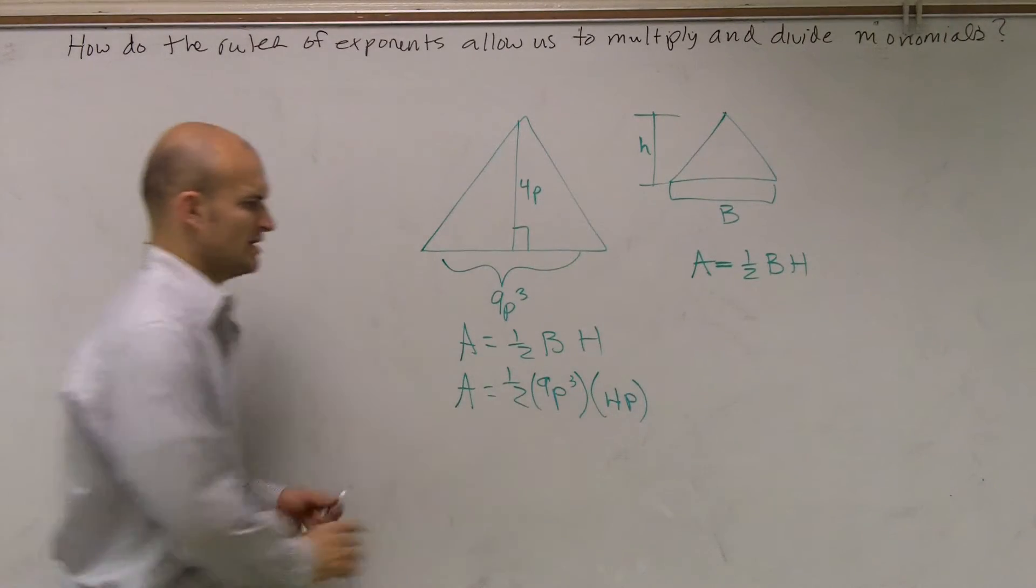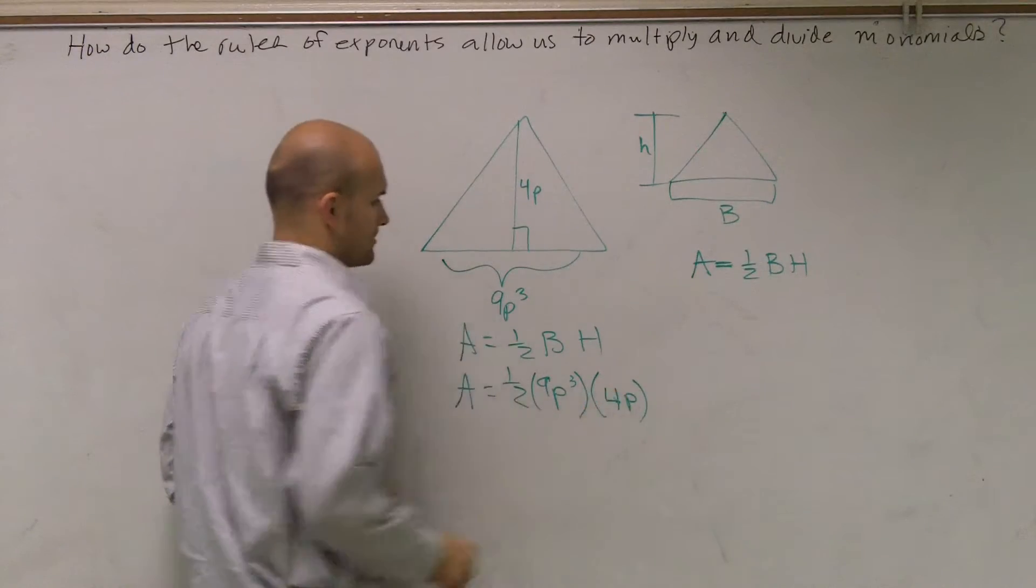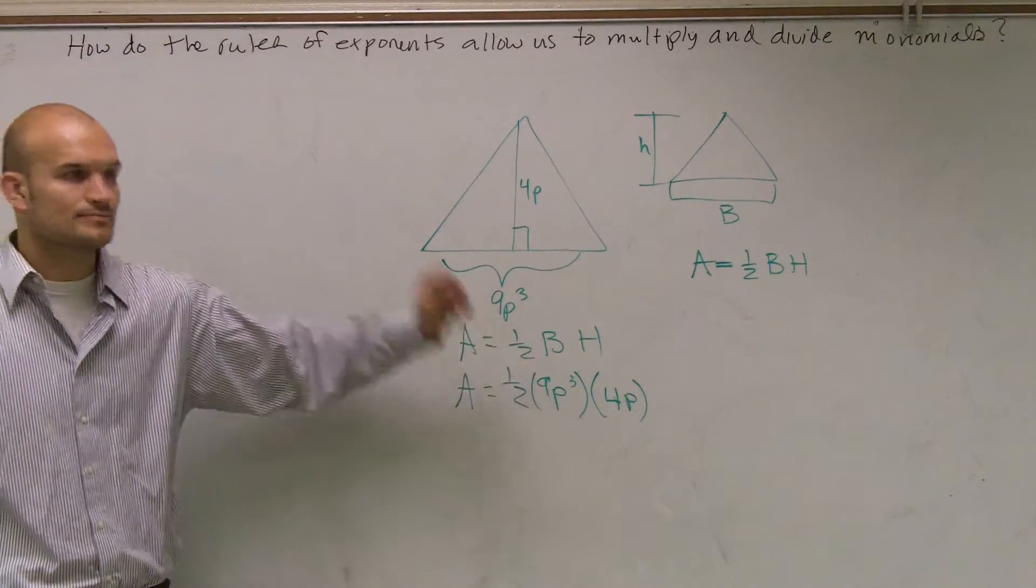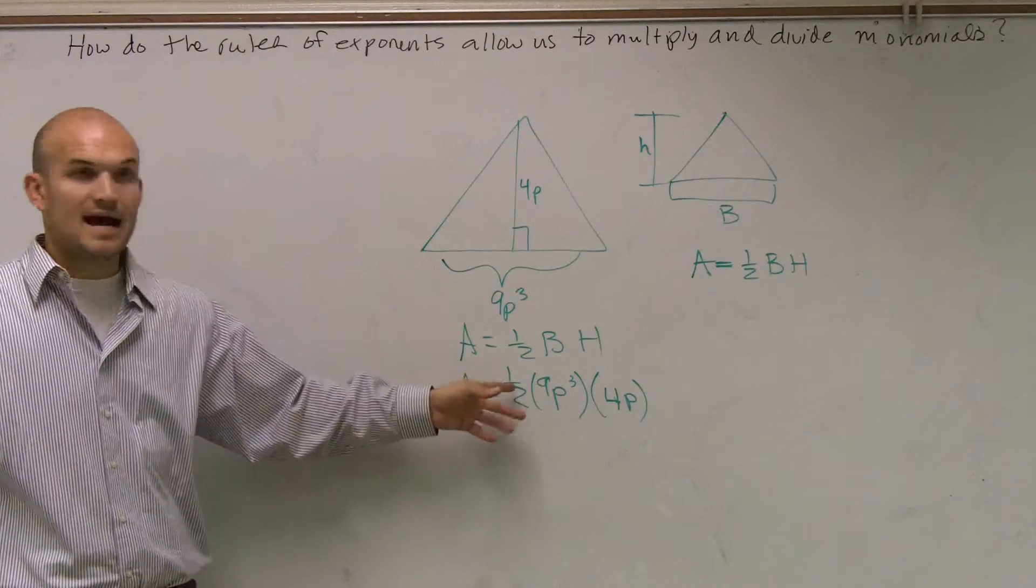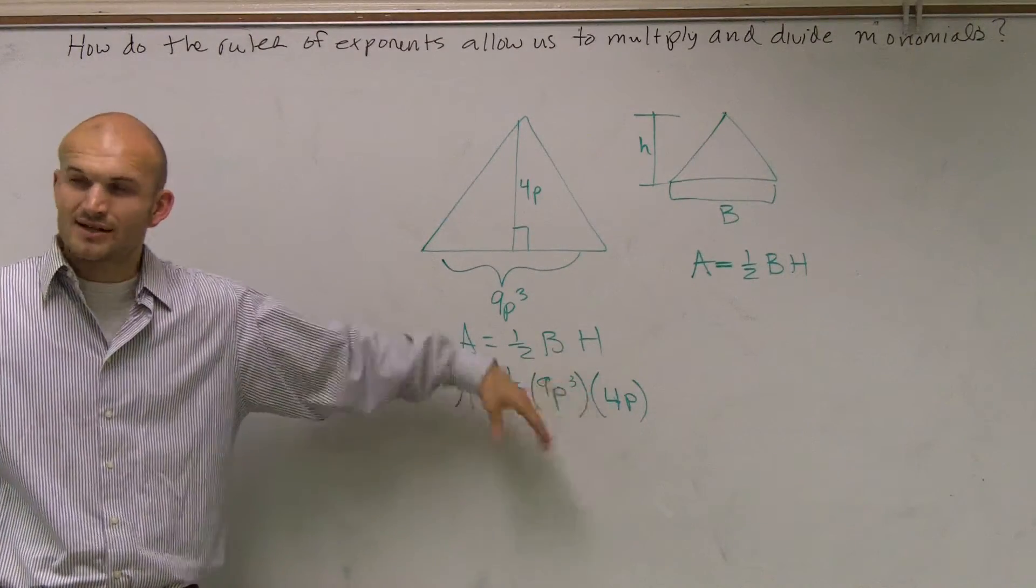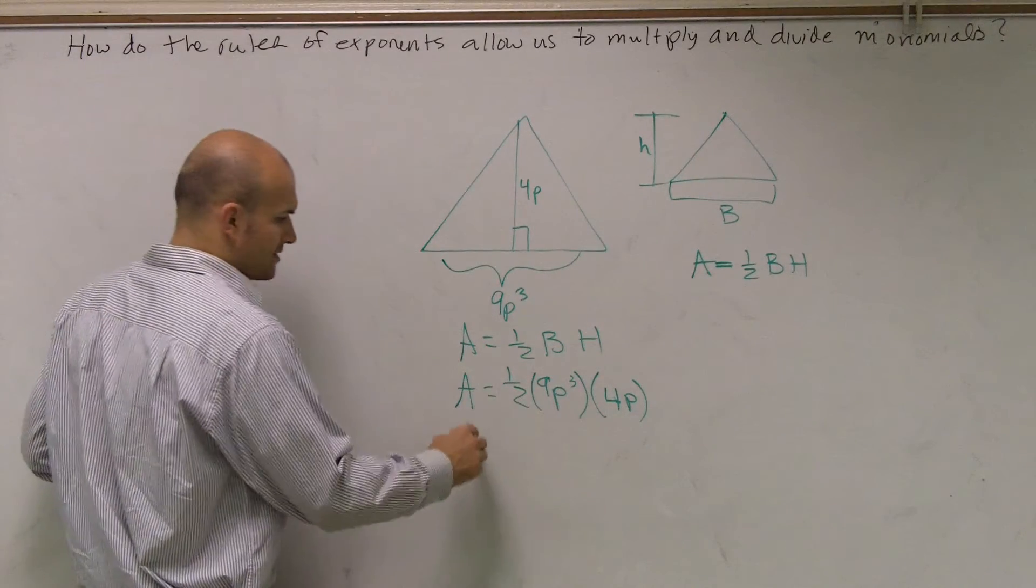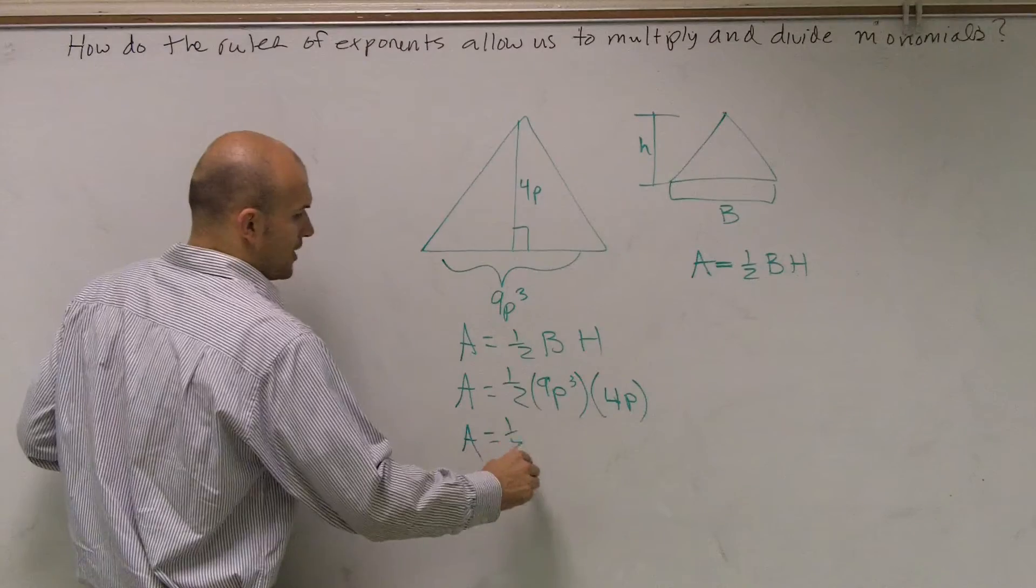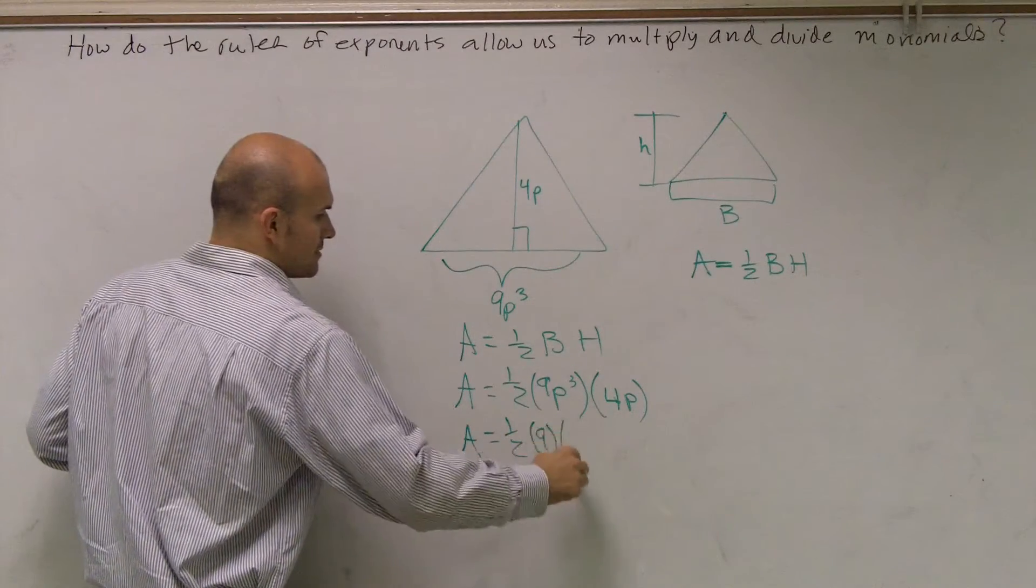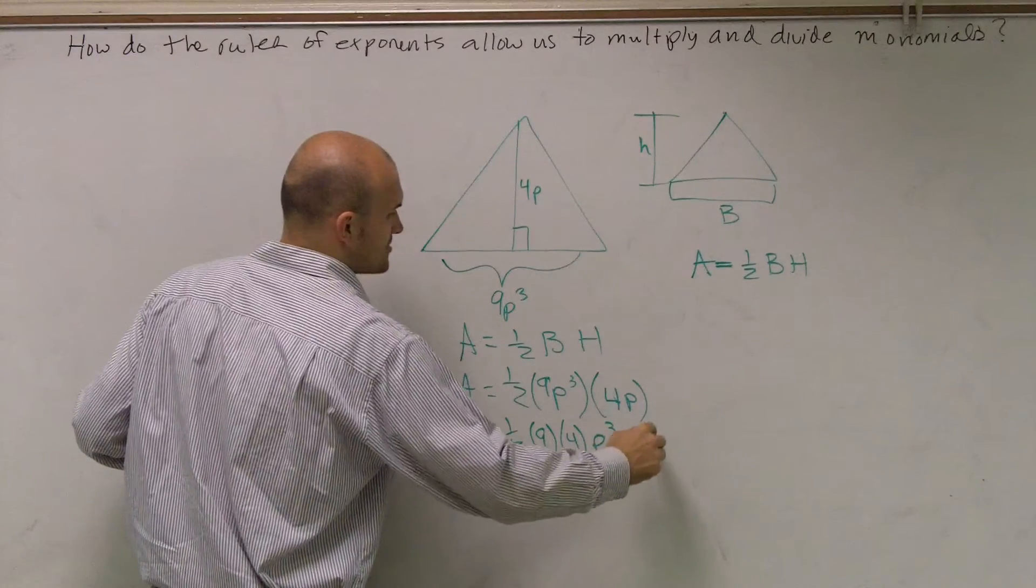Ooh, that looks like p to the third power. So now what I need to do is I can't multiply 9 times p cubed, right? That's already simplified. That's a number times a variable. So what I do is I just write it with my numbers next to each other: one-half times 9 times 4 times p cubed times p.